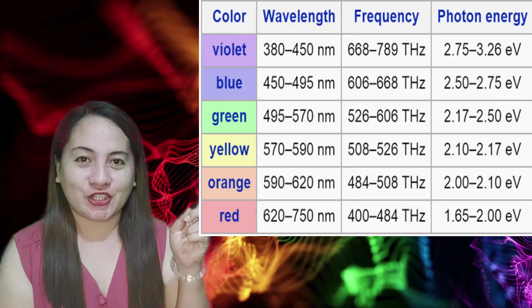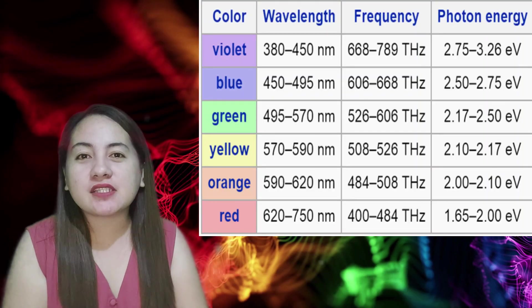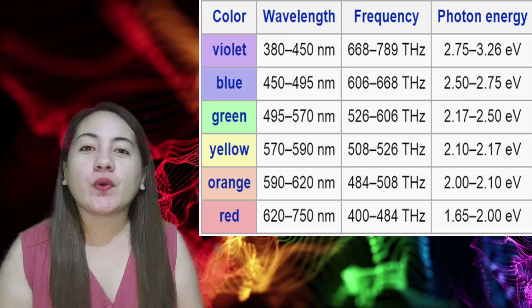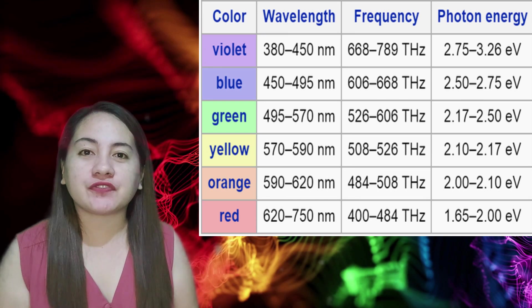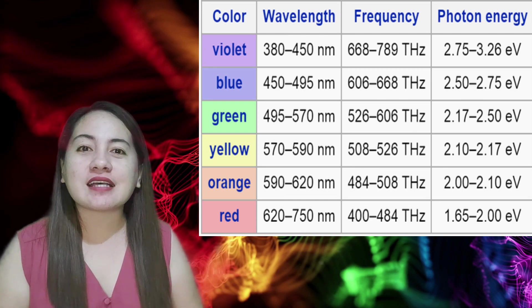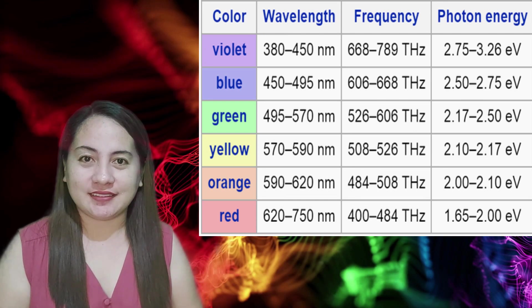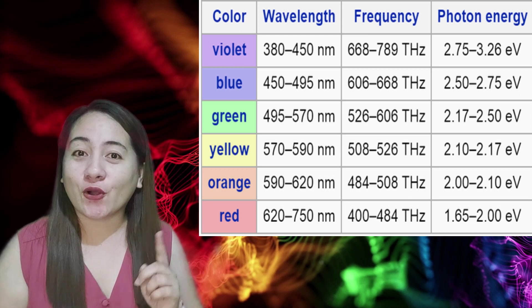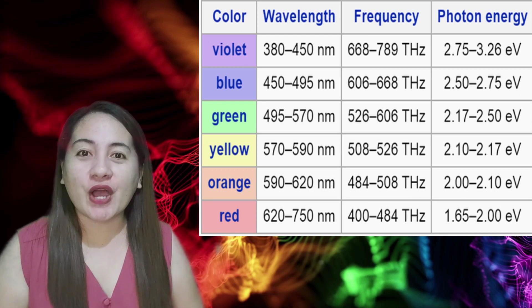Balikan natin yung tanong na ano nga ba ang kinalaman ng hanay ng colors of light sa energy nito. Let us take a look and study this chart. Based from our chart, which specific color of light has the longest wavelength? Correct — that is red.